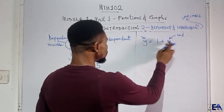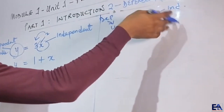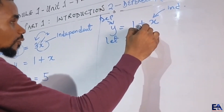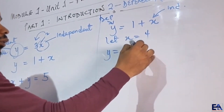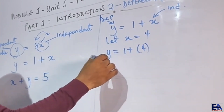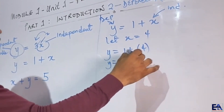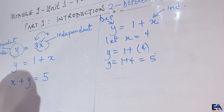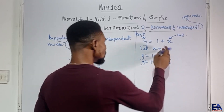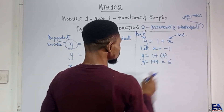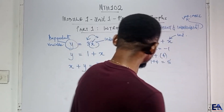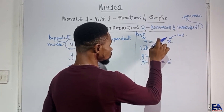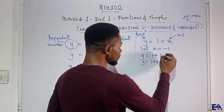So for y equal to 1 plus x, if we let x equal 4, then y equals 1 plus 4, which is 5. What if we let x equal minus 1? If x equals minus 1, then instead of writing 1 plus x, we write 1 plus (minus 1). When introducing a number into an equation or expression, it is good practice in mathematics to keep it in brackets first.